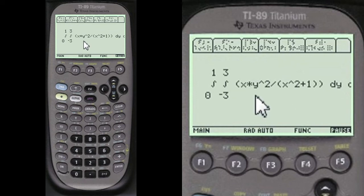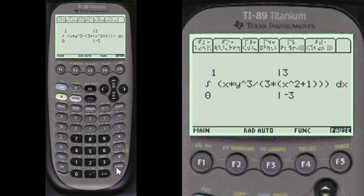And here's the integral right here. And we've done the integral with respect to y here now. Now here's the answer, x times y cubed divided by 3 times x squared plus 1.